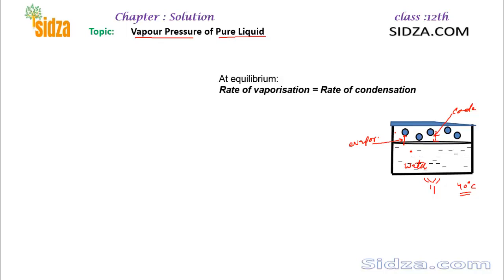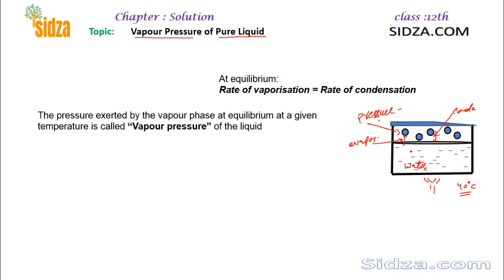At the equilibrium state, the pressure exerted by the vapor molecules on the surface of the liquid is called the vapor pressure. So vapor pressure is the pressure exerted by the vapor phase molecules at the equilibrium state.